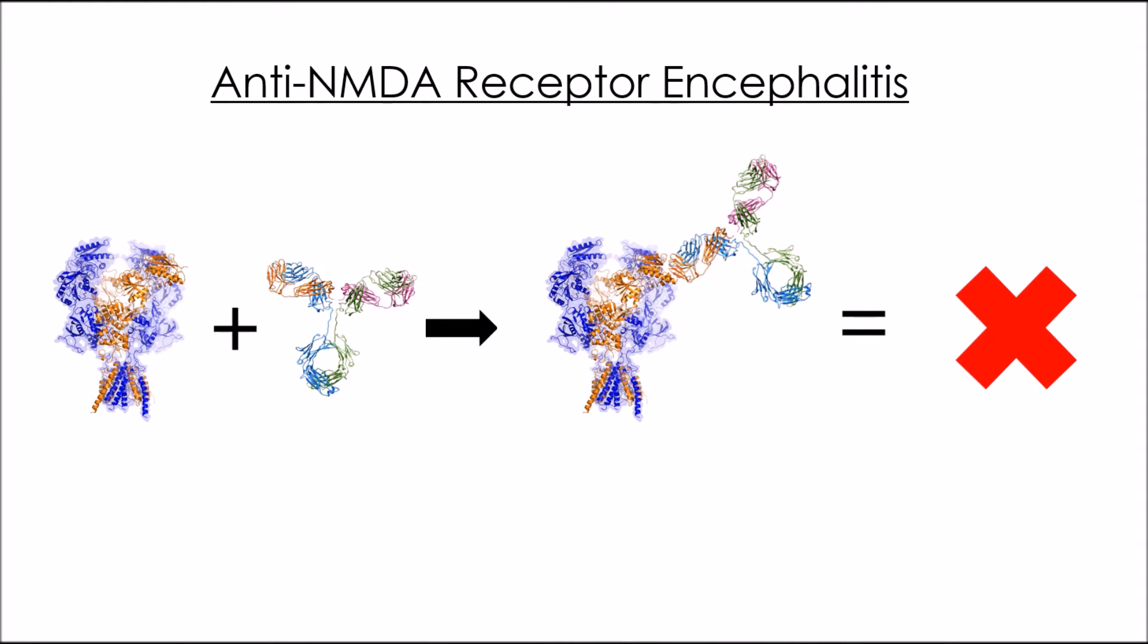Having discussed the structure of the NMDA receptor, it is clear that the receptor is vitally important not just for learning, but for the vast range of excitatory signaling in the nervous system.